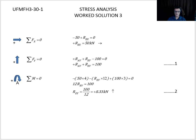Substitute it back into your equation one, and then we're going to find out what our Ray is. So substitute it back into this equation, we're going to take the 100, take away the 8.33, job done. We got our Ray is 91.67 kilonewtons.